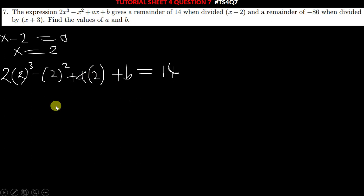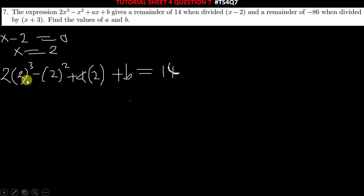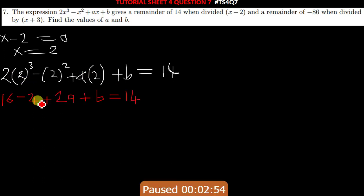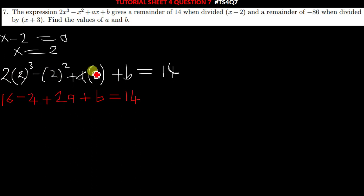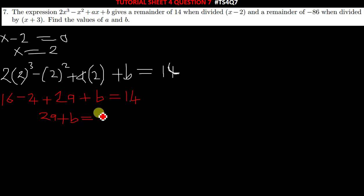Once you do that, you simplify the expression. When you raise 2 to the power 3 you get 8, and 8 times 2 gives 16. Then 2 squared gives 4, and a times 2 gives 2a, and b remains b. So 16 minus 4 gives 12. Taking 12 to the other side: 2a plus b equals 14 minus 12, which is 2. This is equation 1.